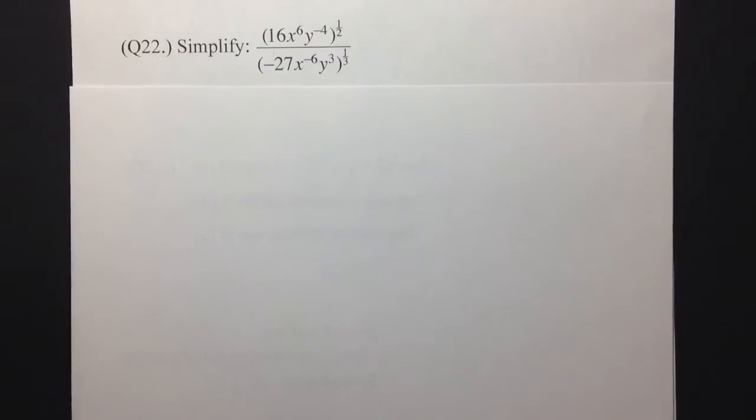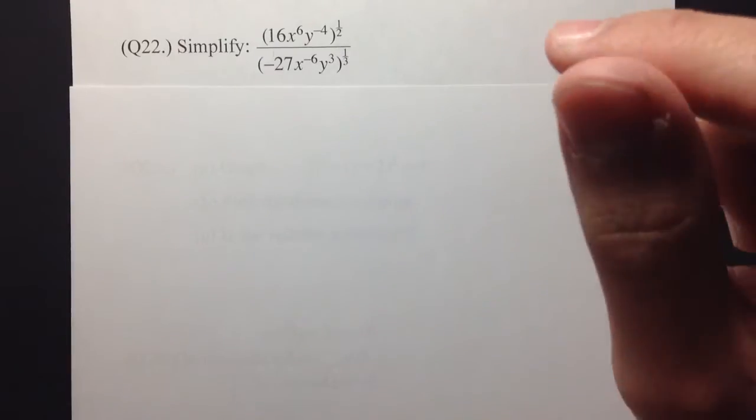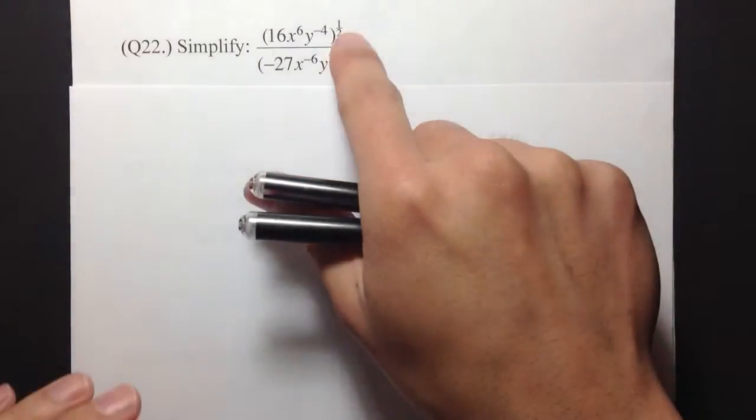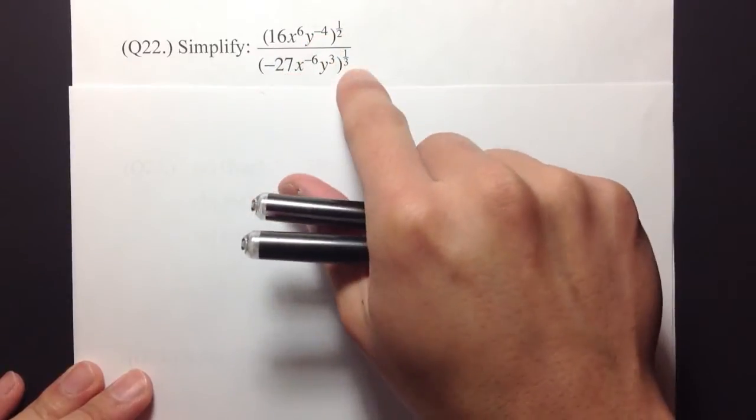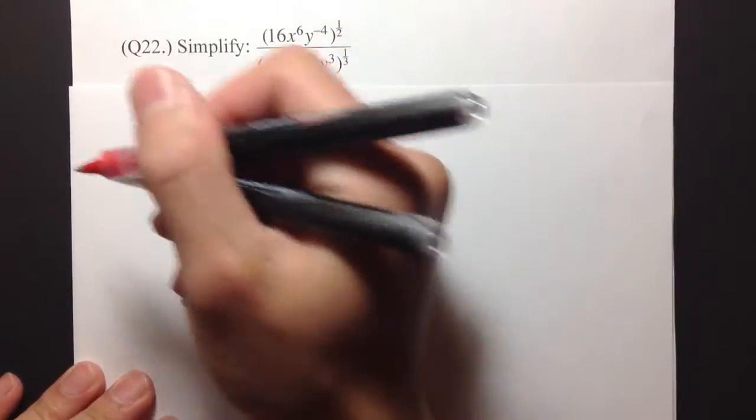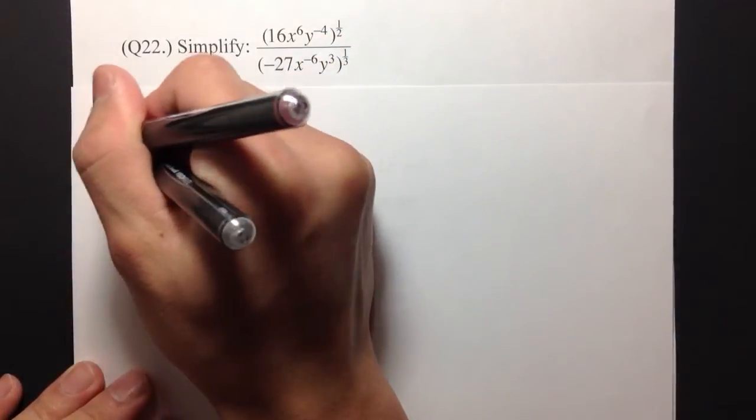For number 22, we are going to use the rule of exponents to simplify this expression. So let's get to work.